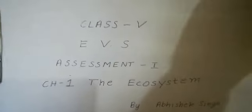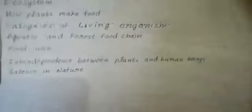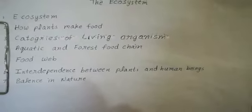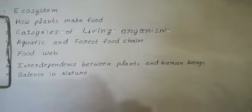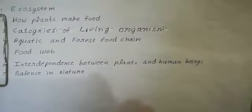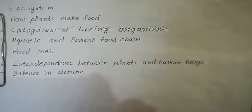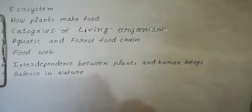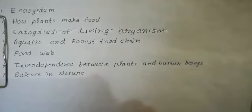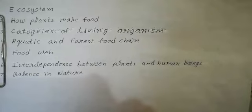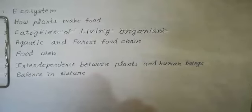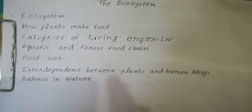In this chapter, I will explain the following topics: Ecosystem, How Plants Make Food, Categories of Living Organisms, Aquatic and Forest Food Chain, Food Web, Interdependence Between Plant and Human Beings, and Balance in Nature.